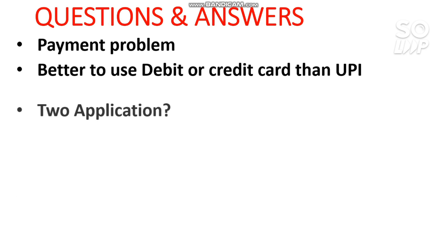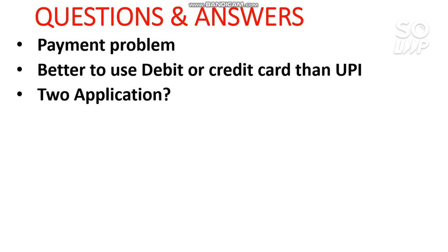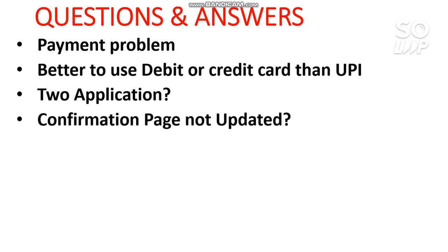If you have applied two applications, first of all, don't apply two applications — one application is enough to attend all attempts of the JEE exam. But if you have mistakenly applied for two applications, don't provide documents in the incorrect one. Provide the original documents in only one application so the other will be cancelled. You will get the refund if you have applied for more than one attempt in any application. If you applied for only one attempt, you will not get any refund — but for two or three attempts, you will get the rest of the refund money.